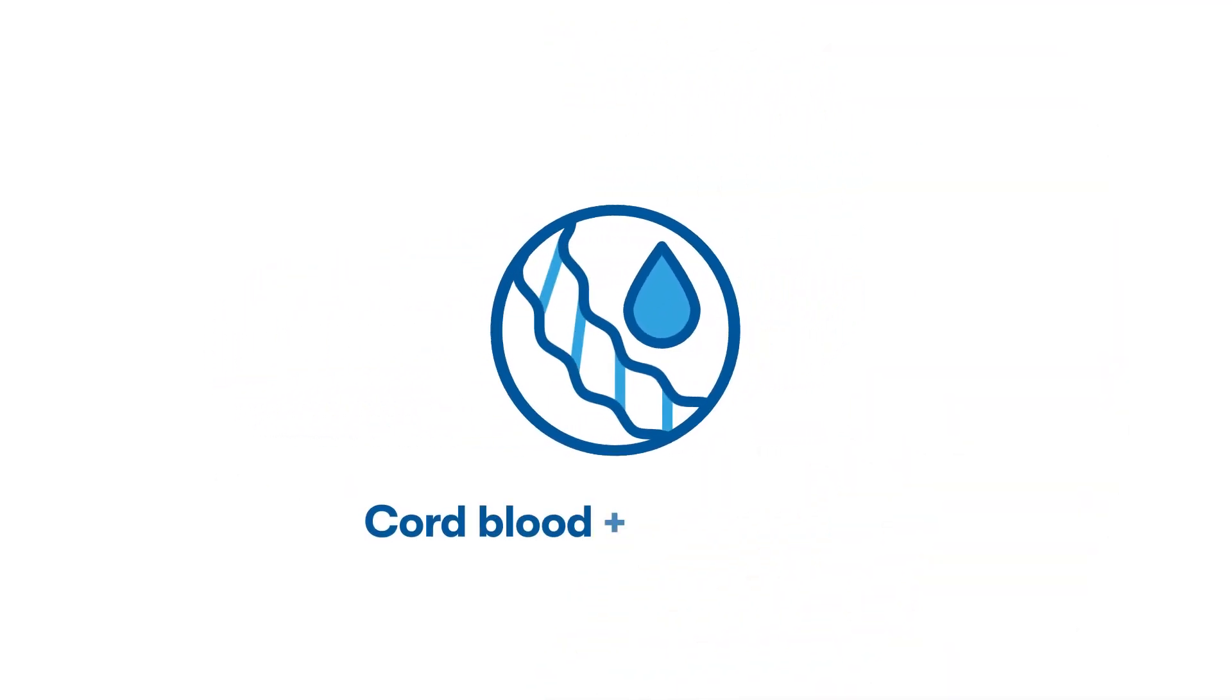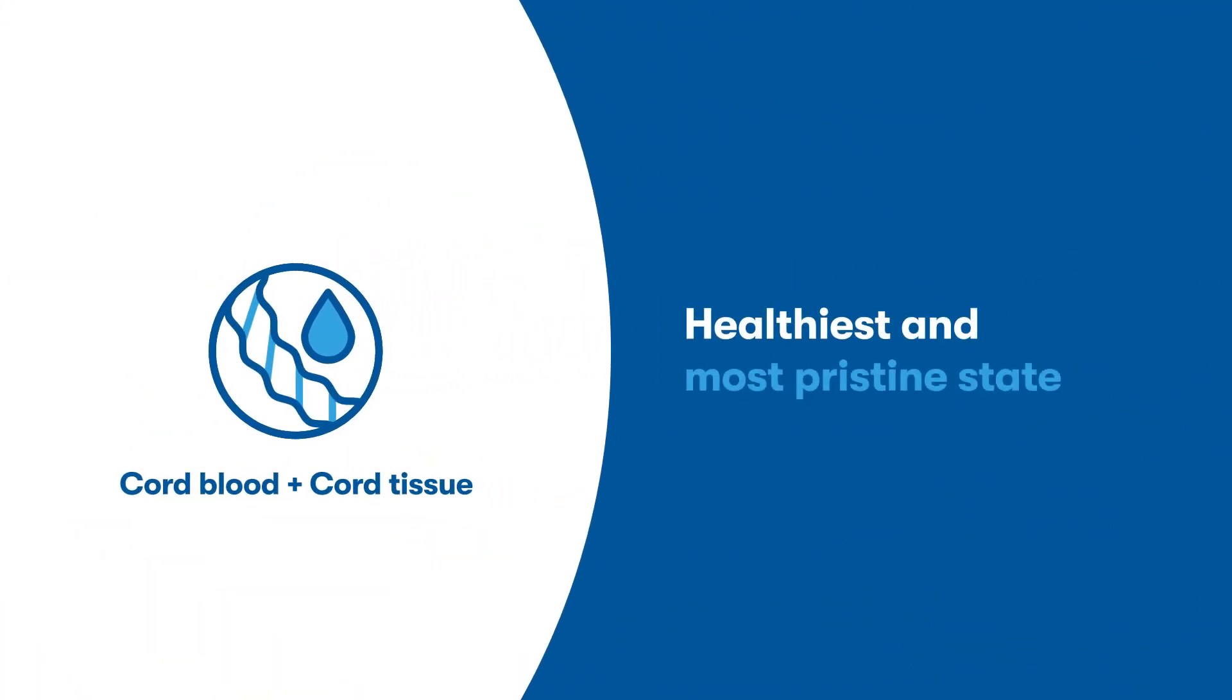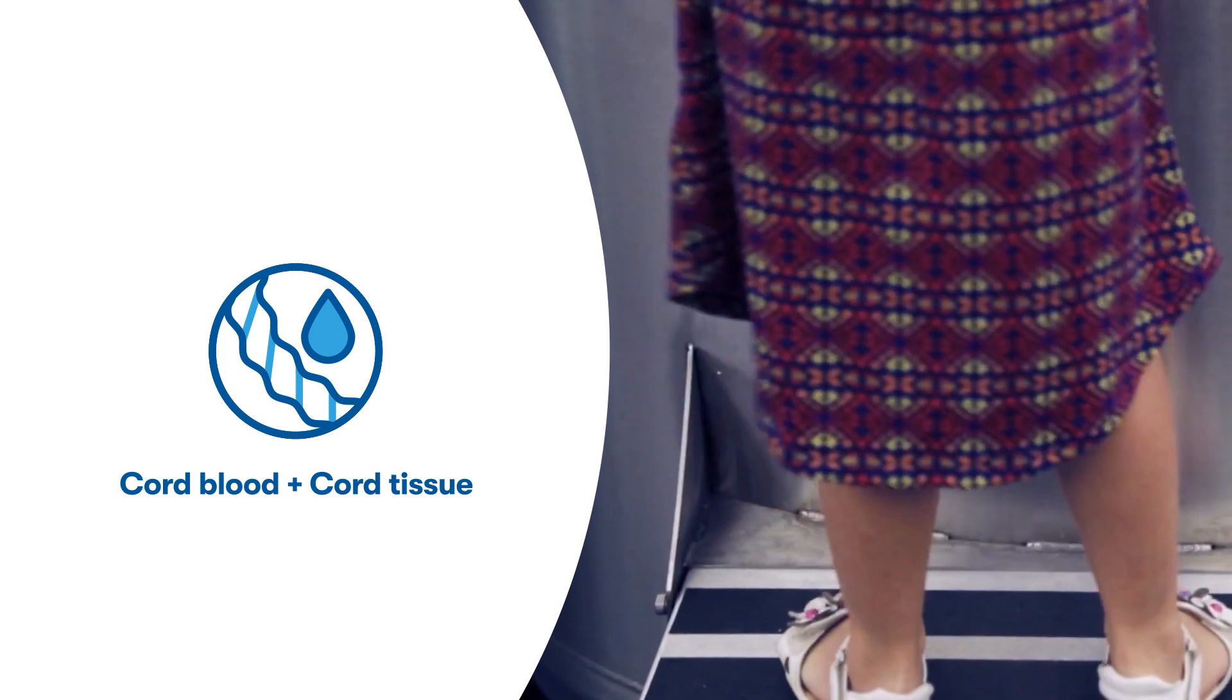When you collect both cord blood and cord tissue stem cells at birth, you get them at their healthiest and most pristine state. That means they'll be in the best possible shape should your family need them.